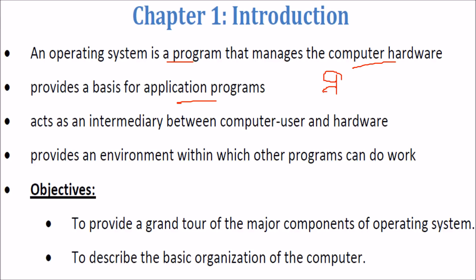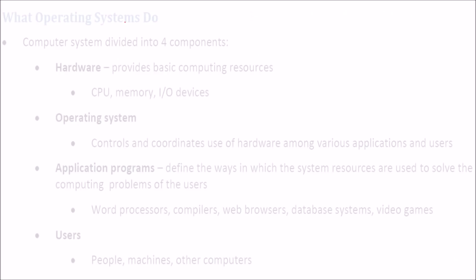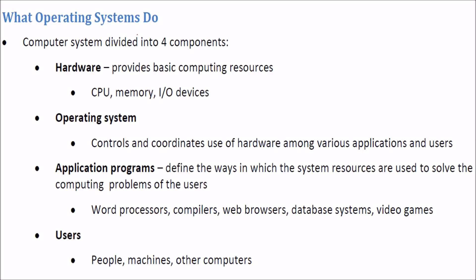The OS is an interface between you and the hardware, and it provides an environment such that all programs can work properly, efficiently, and in harmony. Our objective is to cover the major components of the operating system and describe the basic organization of a computer. The OS has various tasks, and a computer system can be divided into hardware, operating system, application programs, and users.